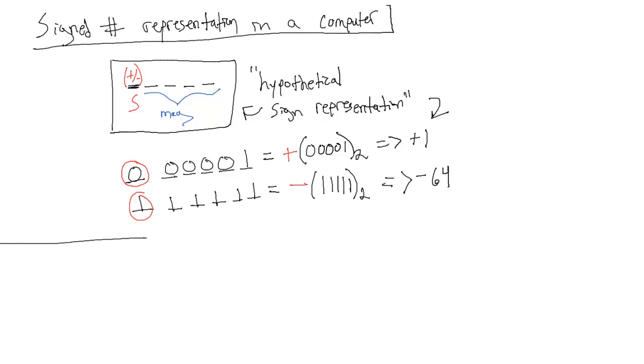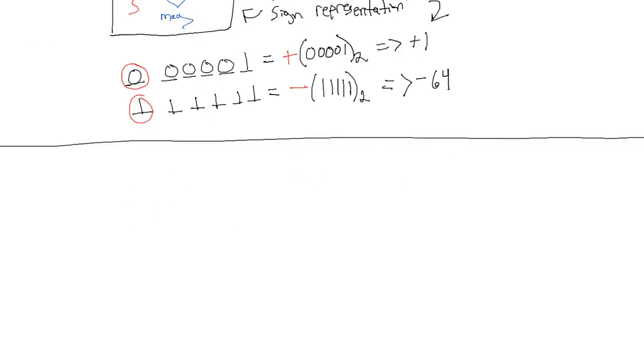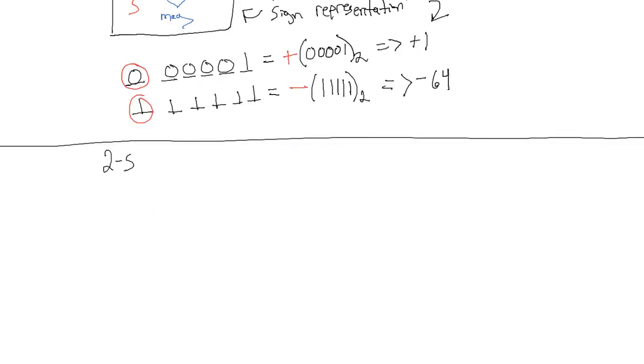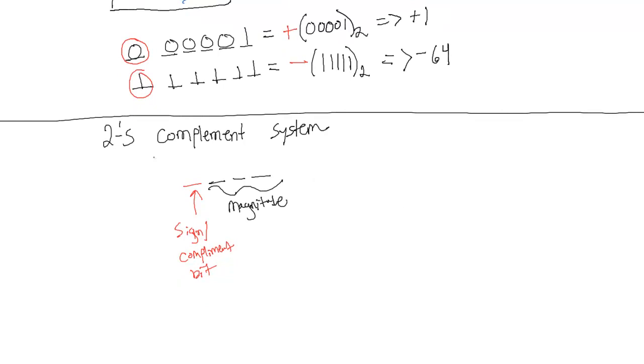So a new system was proposed, and it's called the 2's Complement System. So let's draw out some bits. Let's say we have a magnitude field of 3 bits this time. So this will be our sign slash complement bit, and the rest of the field will be our magnitude. So this is the 2's Complement System.